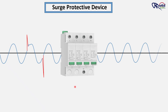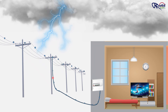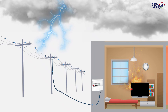For example, if your normal supply voltage is 230 volts, a surge can suddenly push it to 1000 volts or even more for a very short time. Even though it is short, this extra voltage is enough to burn electronic circuits, damage insulation, or even cause fire hazards.